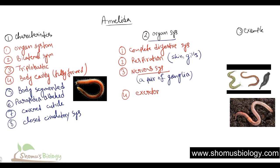The fourth system is the excretory system. They use nephridia for excretion. Nephridia is a very primitive structure of the nephron. It first came as a proto-nephridia, then nephridia, and ultimately evolved into the nephron found in kidney structures.